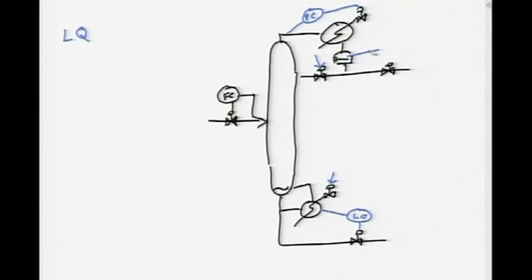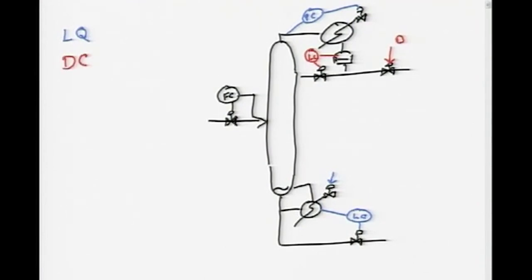You may orient the level controller the other way. If the level controller is oriented this way, then the operator has to set the distillate stream. The operator has to set the distillate flow rate D and the reboiler duty Q. This is the DQ structure.